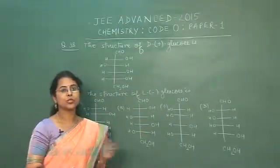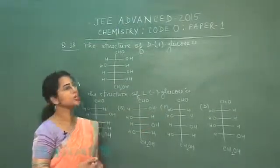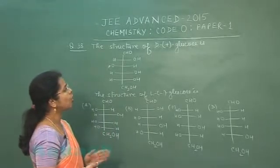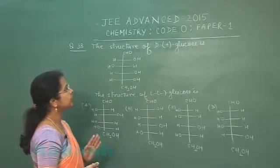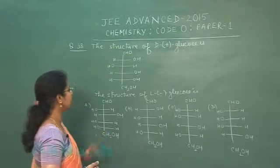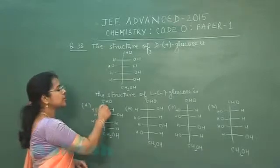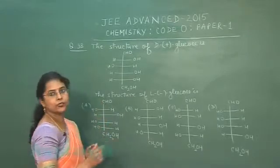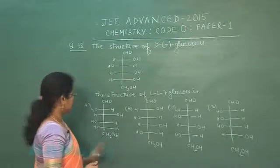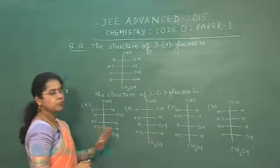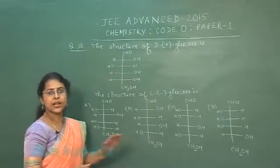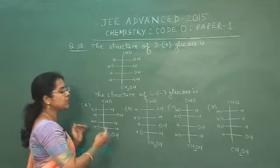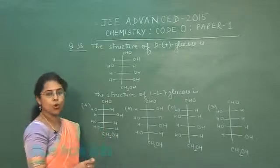The last question of this section is question number 38. The structure of D+ glucose is given, and we have to find the structure of L- glucose among options A, B, C, and D. Four structures are given and we need to determine which structure is correct.